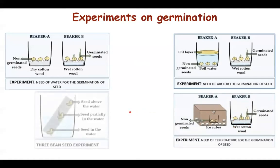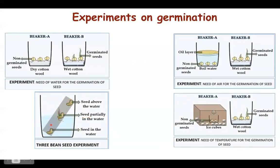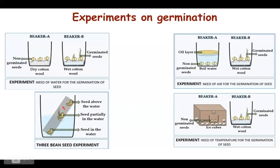This can also be explained by the three bean seed experiment. Place three bean seeds on a ruler: the first is fully submerged in water, the second is partially in water and partially in air, and the third is entirely in air above the water. The first seed may start to germinate but stops due to lack of oxygen. The second seed, getting both air and water, germinates. The third seed, having no water, does not germinate at all.